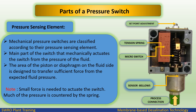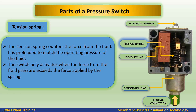Pressure sensing element. Mechanical pressure switches are classified according to their pressure sensing element. It is the main part of the switch that mechanically actuates the switch from the pressure of the fluid. The area of the piston or diaphragm on the fluid side is designed to transfer sufficient force from the expected fluid pressure. Note: only a small force is needed to actuate the switch; much of the pressure is countered by the spring. The tension spring counters the force from the fluid and is preloaded to match the operating pressure. The switch only activates when the force from the fluid pressure exceeds the force applied by the spring.